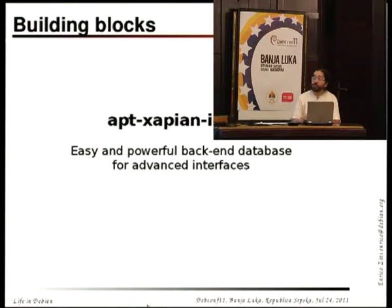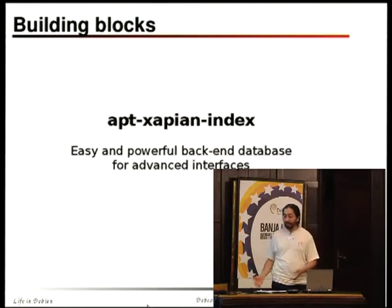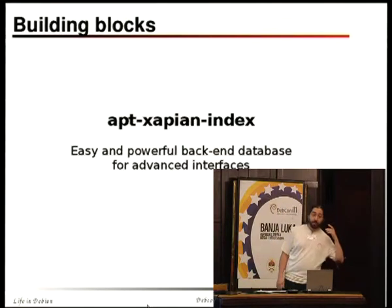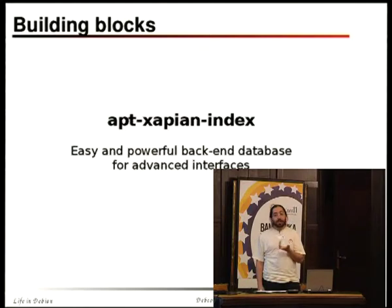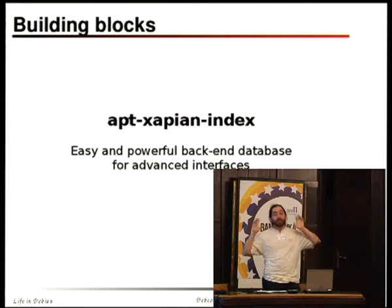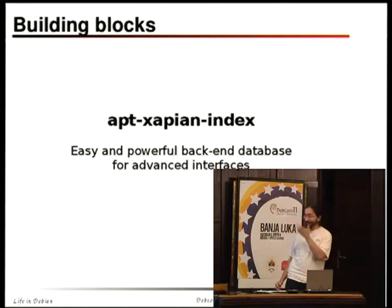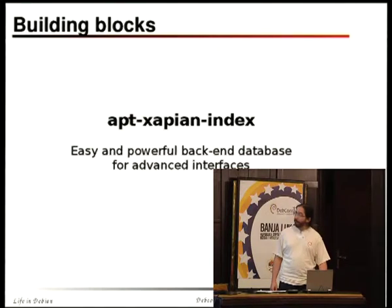In my blog, there are posts that teach you how to use it from code. The examples I posted are in Python, but you access it using the Xapian libraries. Xapian is a search engine library, and the Xapian libraries have bindings for any language. People still complain there are no bindings for Lua, but there are bindings for Perl, Python, Ruby, PHP if you want to do it online, and it's natively C++.